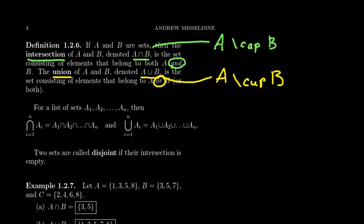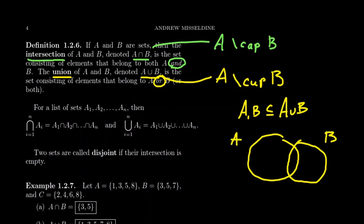When we describe these sets, the sets A and B are subsets of the union. So A is a subset of A union B and B is a subset of A union B. All of A is in there, all of B is in there as well. The overlap right here is the intersection, which is a subset of A and B.